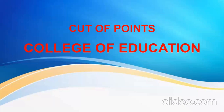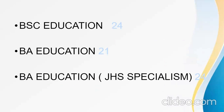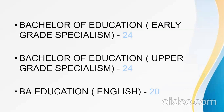Now let's go to cut-off points for the College of Education. BSc Education is 24. Bachelor of Arts, Education is 21. Bachelor of Arts, Education, GHS Specialism is 24. Bachelor of Education, Early Grade Specialism is 24. Bachelor of Education, Upper Grade Specialism is 24. Bachelor of Arts, Education, English is 20.